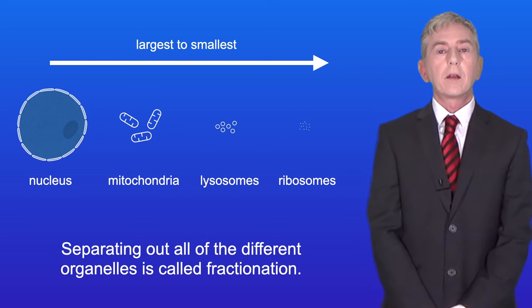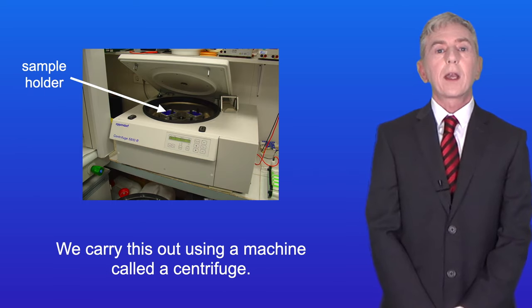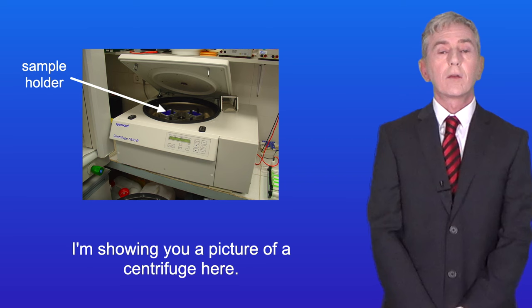Separating out all of the different organelles is called fractionation and we carry this out using a machine called a centrifuge. I'm showing you a picture of a centrifuge here.